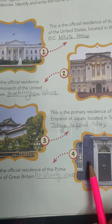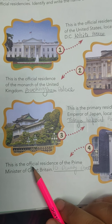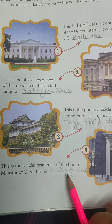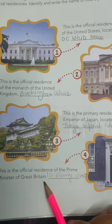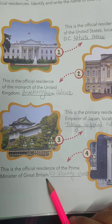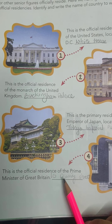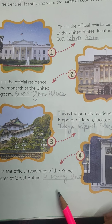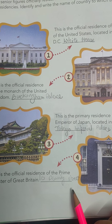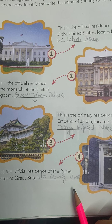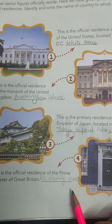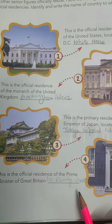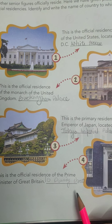Number 4: This is the official residence of the Prime Minister of Great Britain. The Prime Minister of Great Britain lives in 10 Downing Street. This is the name of the place where the Prime Minister of Great Britain lives.